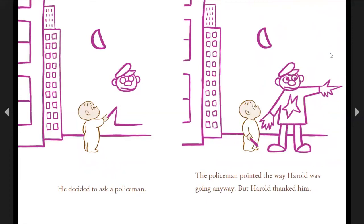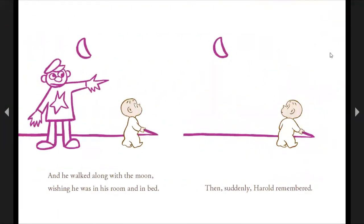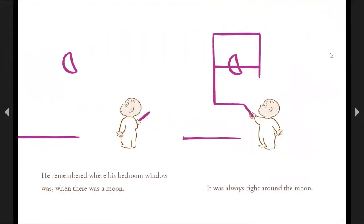He decided to ask the policeman. The policeman pointed the way Harold was going anyway. But Harold thanked him. And he walked along with the moon, wishing he was in his room and in bed. Then suddenly, Harold remembered. He remembered where his bedroom window was when there was a moon. It was always right around the moon.